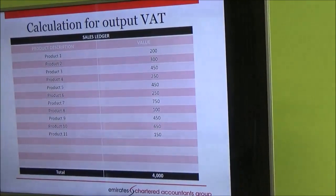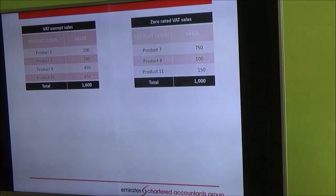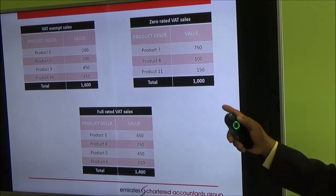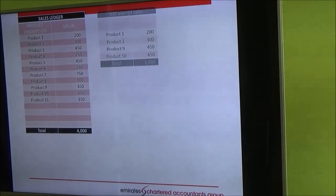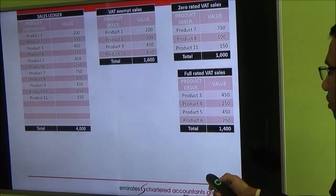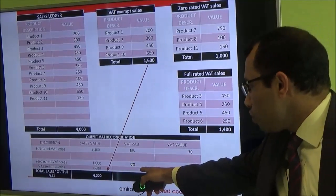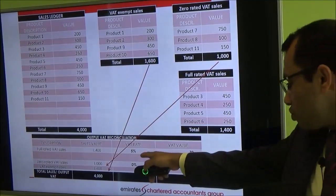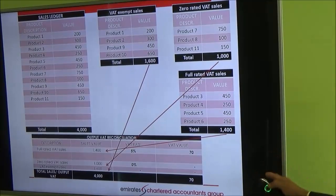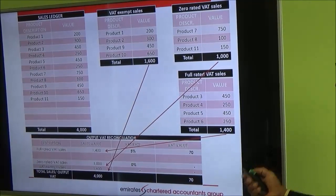The same 11 products are sold for 4,000 dirhams total. Categorizing them: VAT-exempt sales are 1,600 dirhams, 0-rated sales are 1,000 dirhams, and full-rated sales are 1,400 dirhams, totalling 4,000 dirhams. On the output VAT: exempt 1,600 — no VAT; 0-rated 1,000 — no VAT; full-rated 1,400 at 5% equals 70 dirhams output VAT.